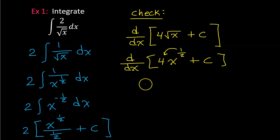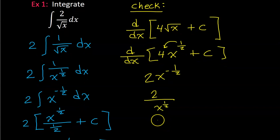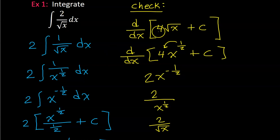So 1/2 of 4 is 2, and then we decrease the exponent by 1: 1/2 minus 1 is negative 1/2. The derivative of a constant is just 0. The negative 1/2 power drops x down to the denominator, giving us 2 over x to the 1/2 power, which is 2 over the square root of x. Since this is the original function, that proves that 4 times the square root of x plus c is the antiderivative.